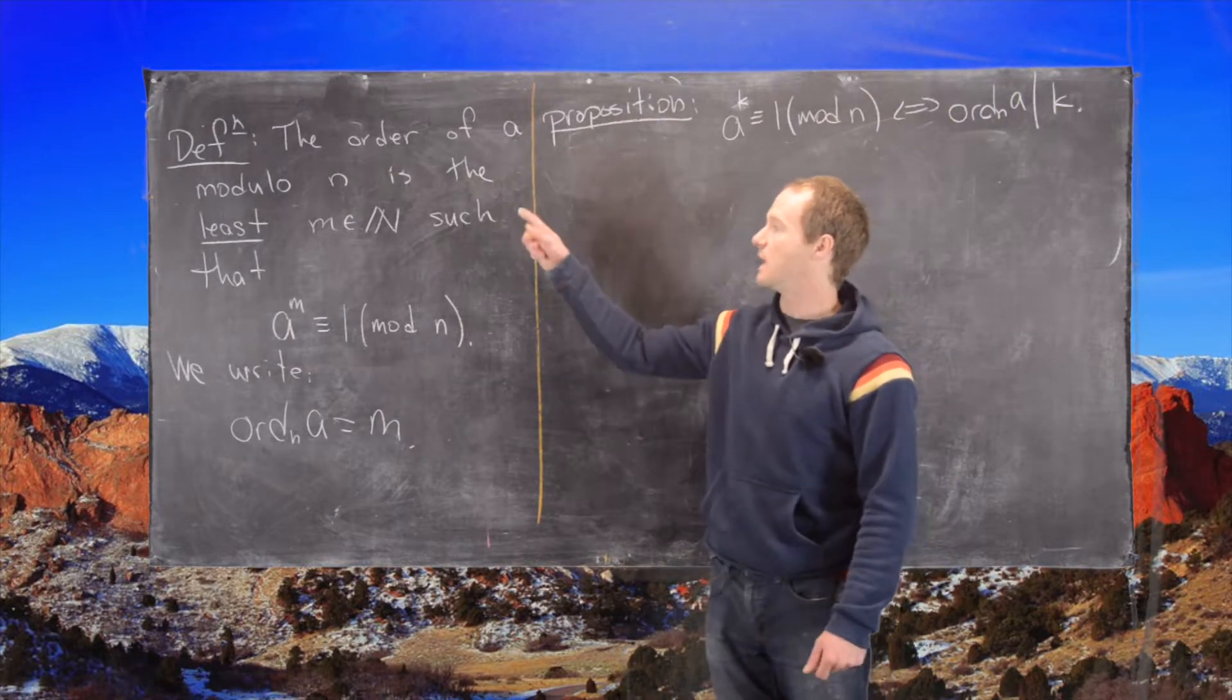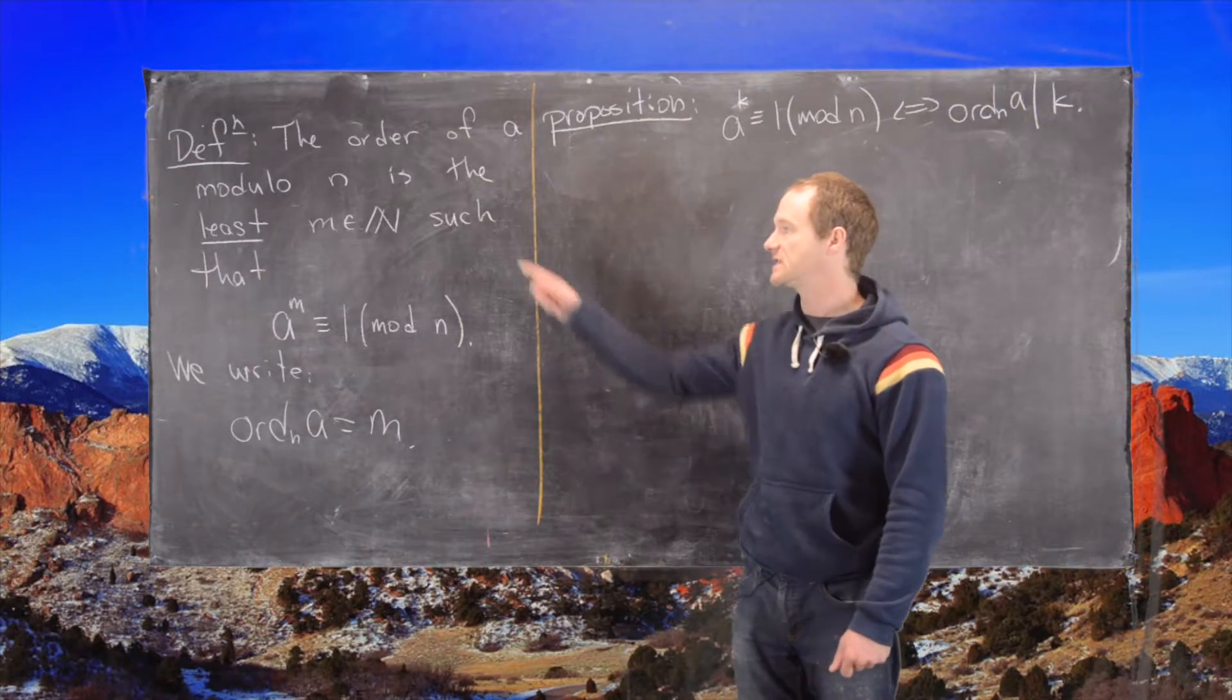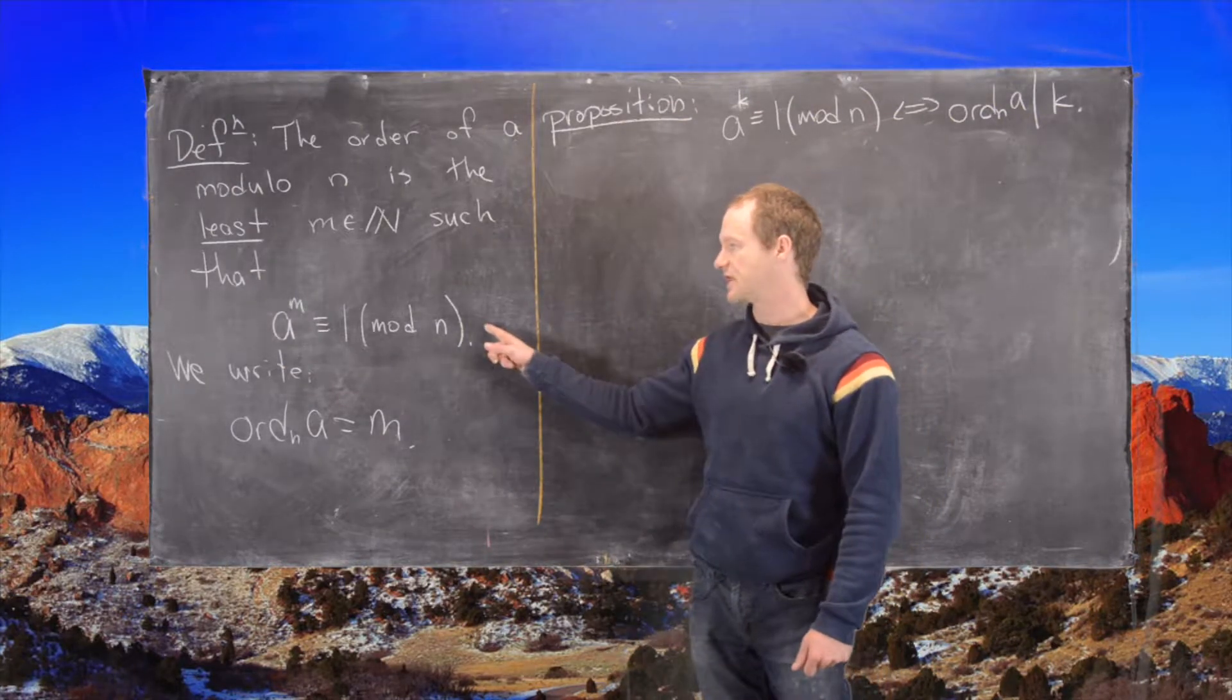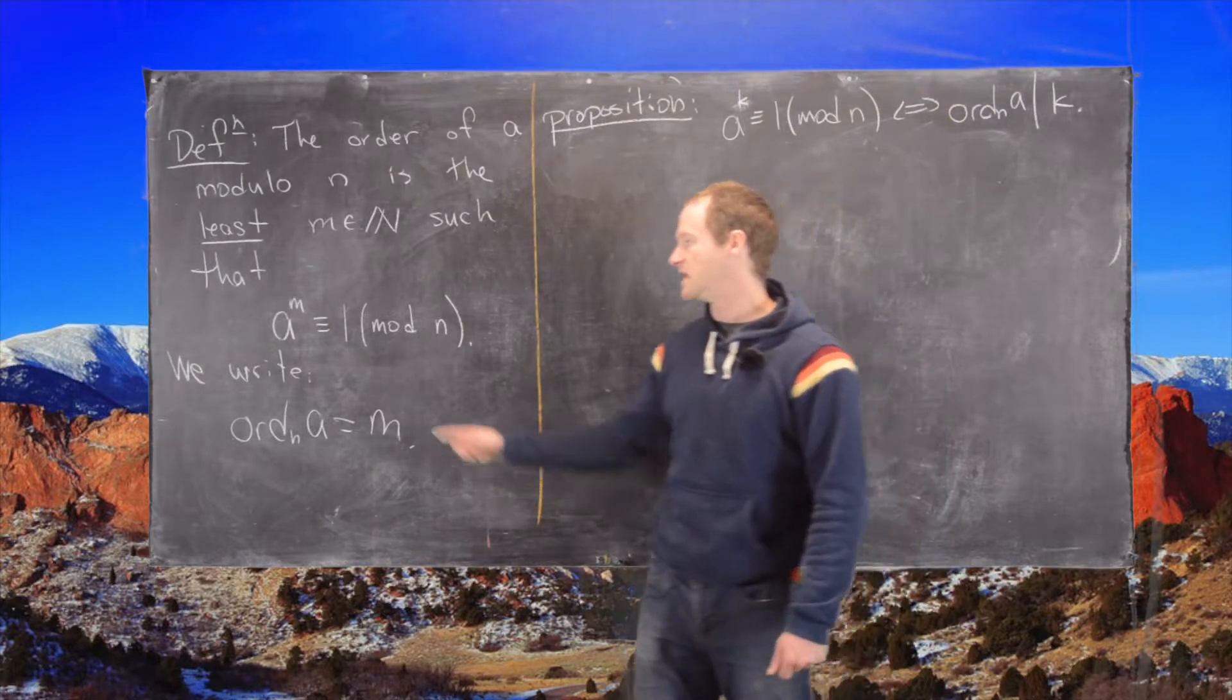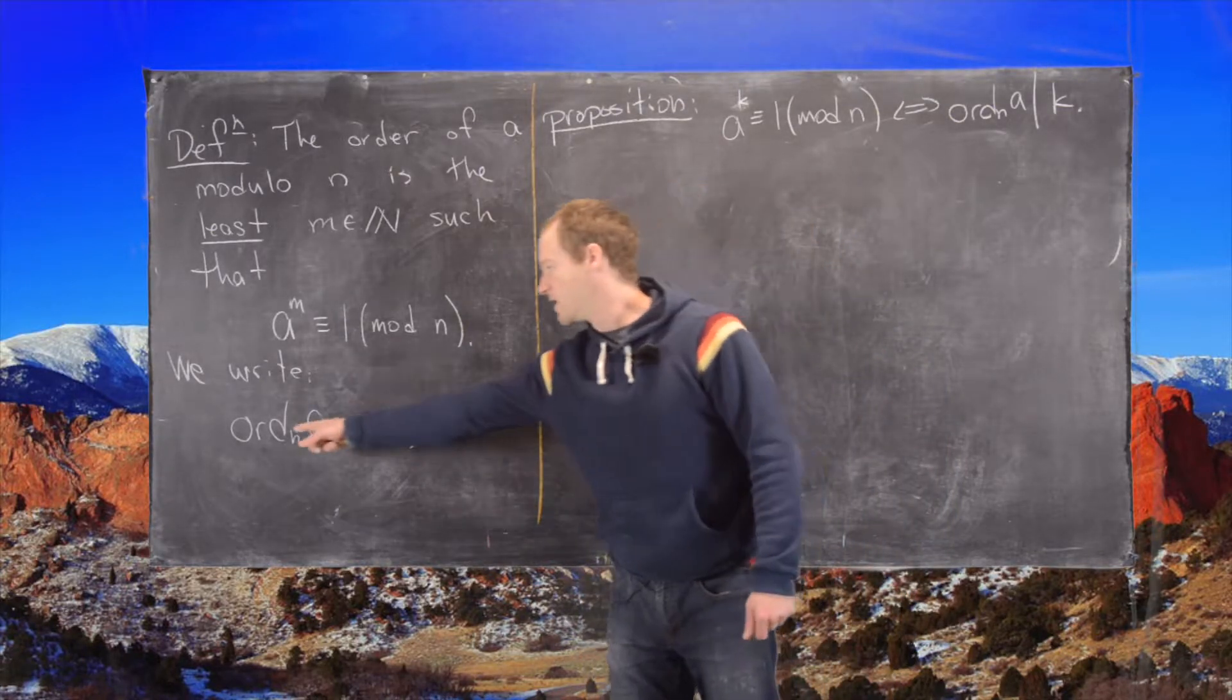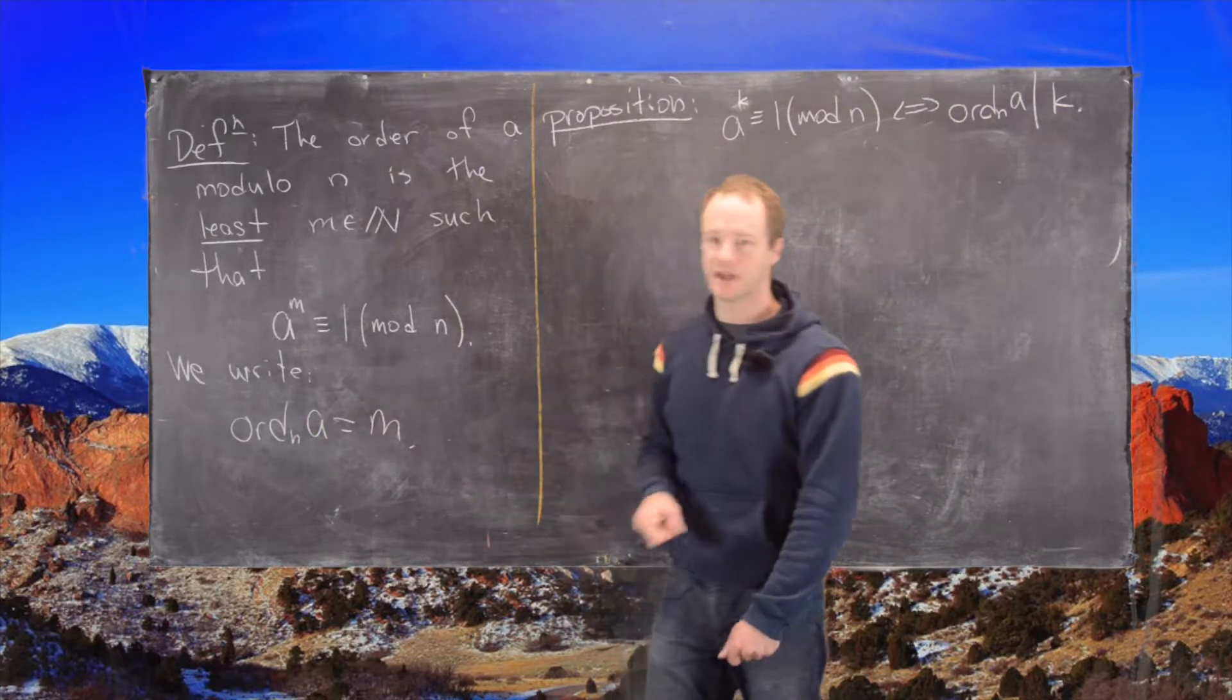The order of a mod n is the least natural number m such that a to the m is congruent to 1 mod n. And in that case we would write ord_n(a) equals m.